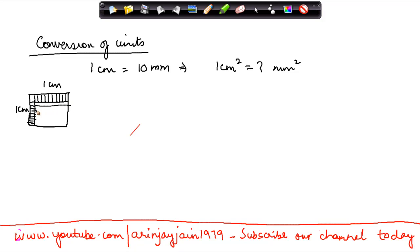So if you extend all these lines, you will get 100 squares of 1 millimeter each. Which means that the area of a square with 1 centimeter side is equal to the area of 100 squares with 1 millimeter side.